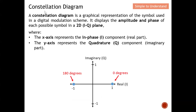A constellation diagram is a graphical representation of the symbol used in a digital modulation scheme. Note it represents symbols, not just individual bits. A constellation diagram is simply a 2D IQ plane which displays the amplitude and also the phase. That is why only amplitude-based ASK and phase-based PSK can be represented, while frequency shifting cannot be represented in the constellation diagram.